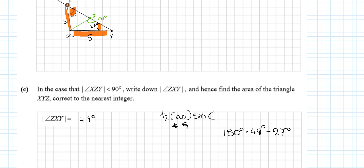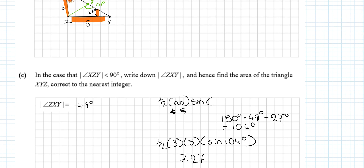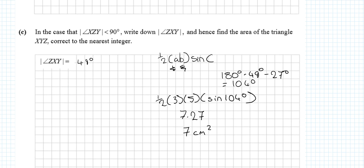Angle X = 180° − 49° − 27° = 104°. So area = ½ × 3 × 5 × sin 104° = 7.27. Correct to the nearest integer that's 7, and the units are centimetres, so the area is 7 cm².